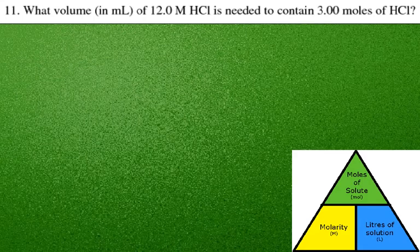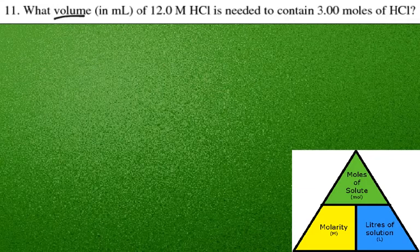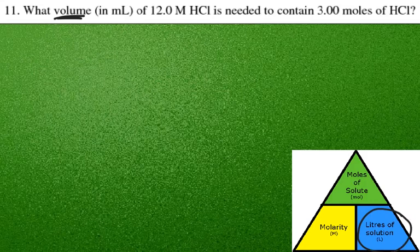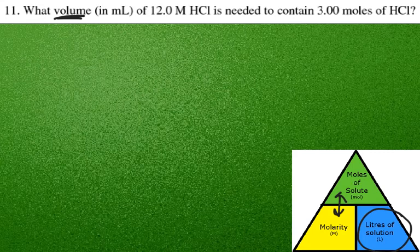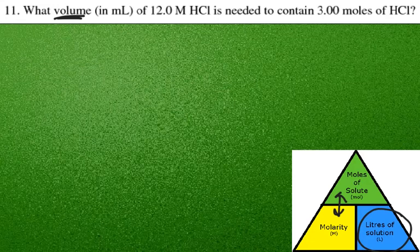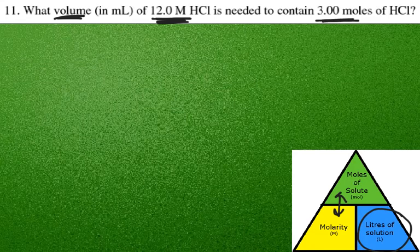Number eleven. Number eleven is asking us to find volume. Volume is this guy over here, our liters, our solution. So, we see that we need moles and molarity because we have to use moles and molarity to find the volume over here. Moles will be divided by molarity, and that will give us the answer in terms of volume. We look at the information we're given. We are given big M, so we have our molarity. We're also given moles. So, we just use these two guys. We're going to divide them and get our liters in volume.